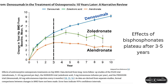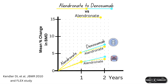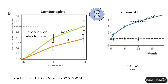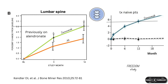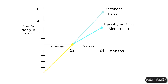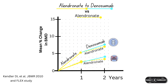How about alendronate to denosumab, or zoledronic acid to denosumab? Most guidelines do recommend denosumab as a backup for bisphosphonates. In a study by Kendler et al., denosumab gives bigger BMD gains when transitioned from alendronate compared to patients who remained on alendronate. Bisphosphonates do blunt the effect of denosumab: the FREEDOM study shows spine BMD gains of more than five percent in treatment-naive patients but only around three percent in patients previously on alendronate. It is still a transition worth considering in patients not getting the desired outcome on bisphosphonates.